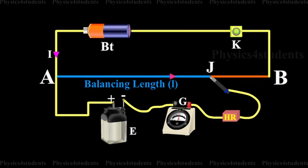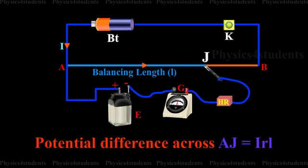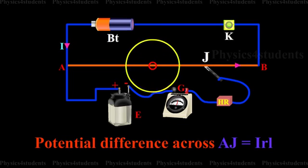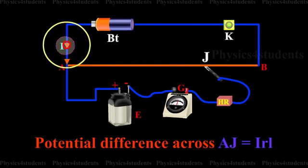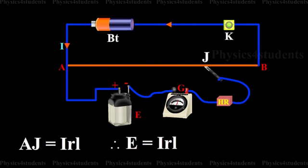If the balancing length is L, the potential difference across AJ is equal to IRL, where R is the resistance per unit length of the potentiometer wire and I is the current in the primary circuit. Therefore, E equals IRL.